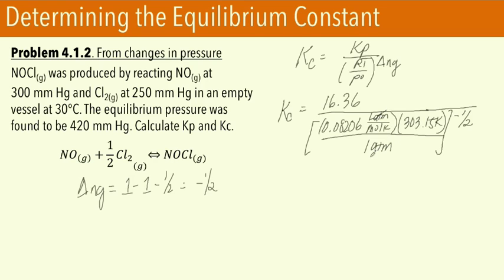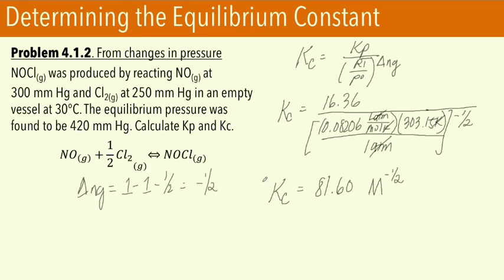For our next problem, we want to formulate an expression for the equilibrium constant KP as a function of the degree of dissociation alpha and the equilibrium pressure Pt for a given reaction. The degree of dissociation alpha tells us the number of moles of a species that gets dissociated over the initial number of moles of that species. Using a typical equilibrium strategy with an ICE table in terms of number of moles, let's say we have n moles of PCl5 as our starting point with no products initially.